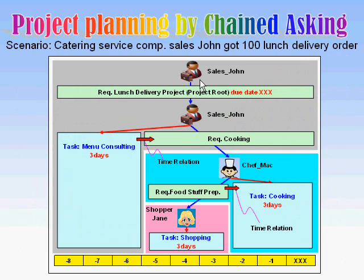Let's imagine a situation where John is a salesman of a catering service company and he got 100 lunch delivery orders. To conduct this job, sales John issued a top request with a due date and created his menu consultation task with three days' duration, then issued a cooking request to Chef Mac and set a time relation from the consulting task to the cooking request.